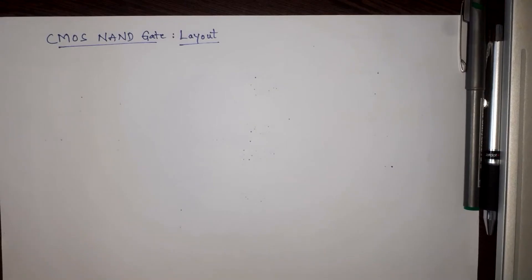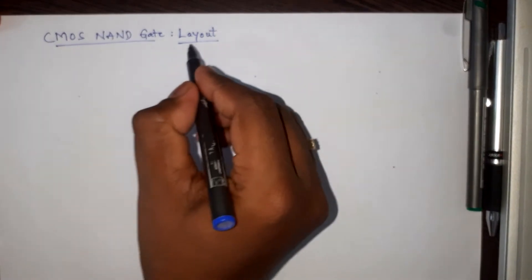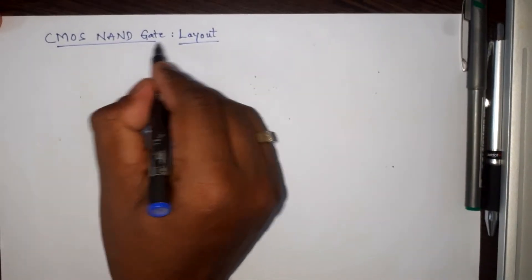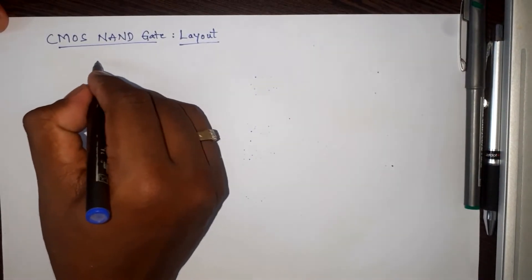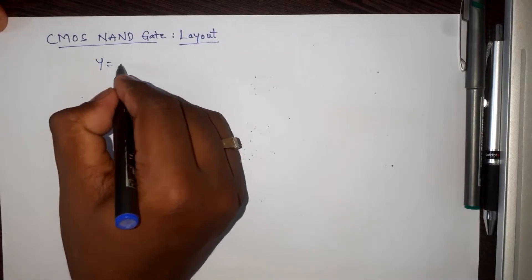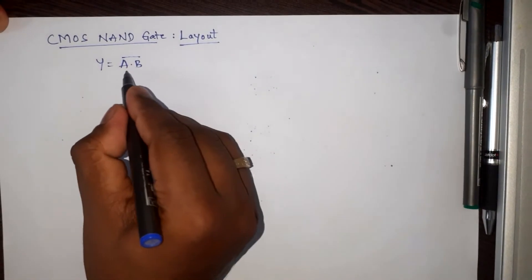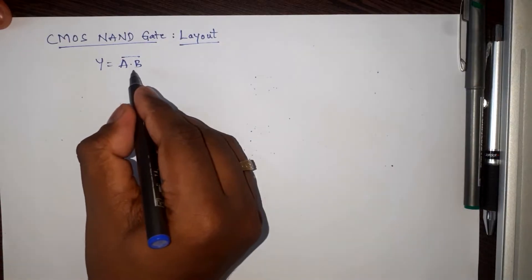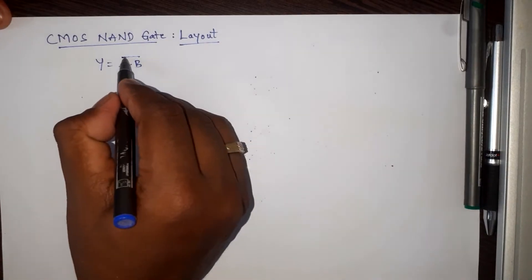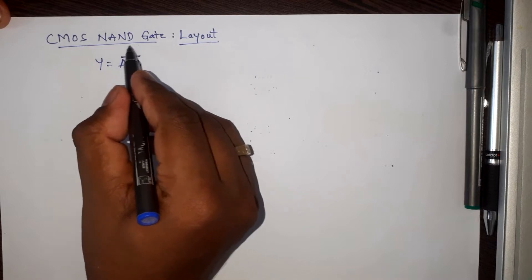In the previous video we saw the CMOS inverter and its layout. In this video, let me write the layout for a CMOS NAND gate. First, let us write the expression for NAND gate: Y is equal to A·B bar. I am taking a two-input NAND gate here as the example, so A·B bar is the expression representing the NAND gate functionality.